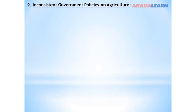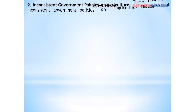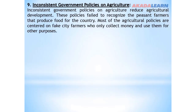Problem number nine: Inconsistent government policies on agriculture is also one of the major problems facing agricultural development in Nigeria. Inconsistent government policies reduce agricultural development, as these policies fail to support the peasant farmers that produce food for the country. Most of the agricultural policies are centered on city-based individuals who only collect money and use it for other purposes.